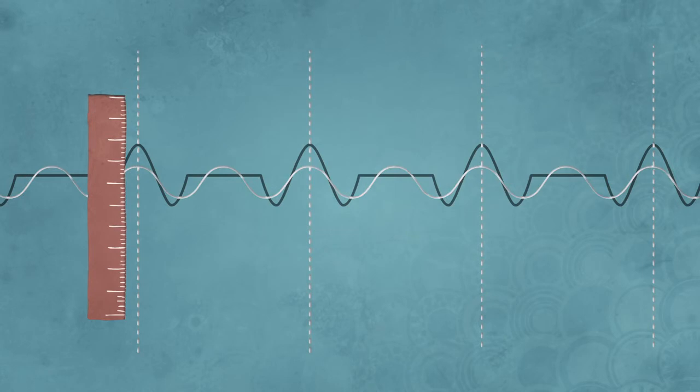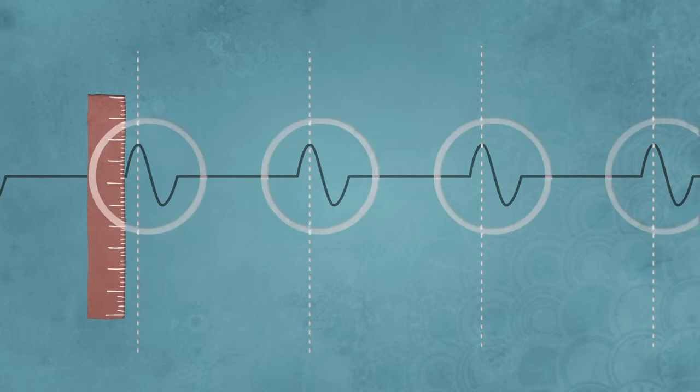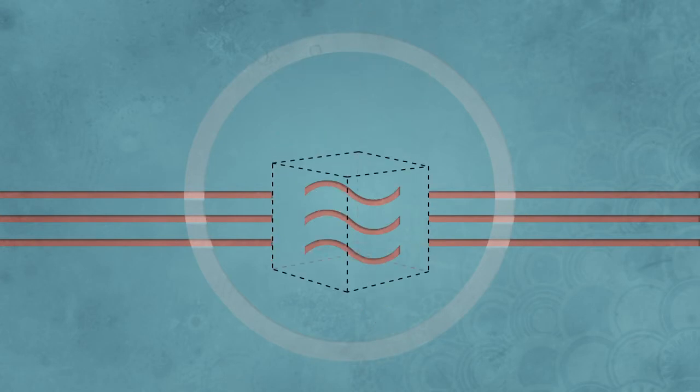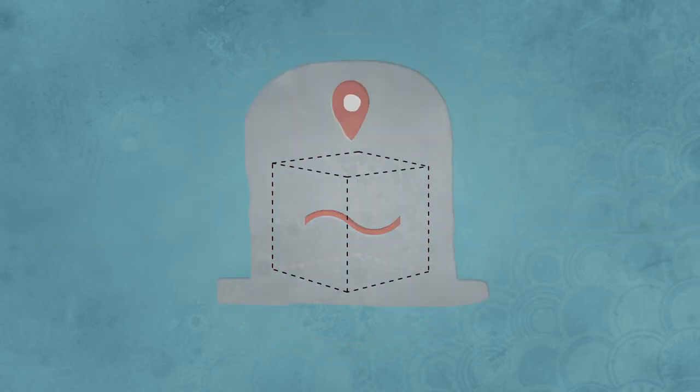If we add a third wave, the regions where the waves cancel out get bigger. A fourth and they get bigger still, with the wavy regions becoming narrower. If we keep adding waves, we can make a wave packet with a clear wavelength in one small region. That's a quantum object with both wave and particle nature.